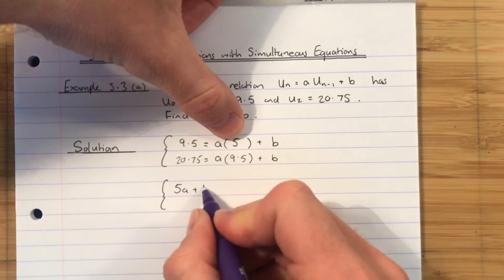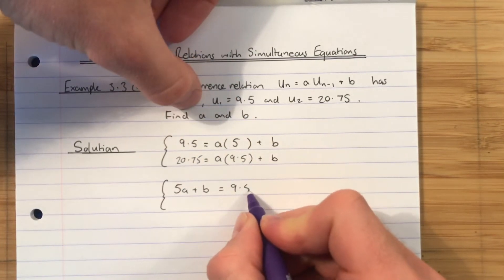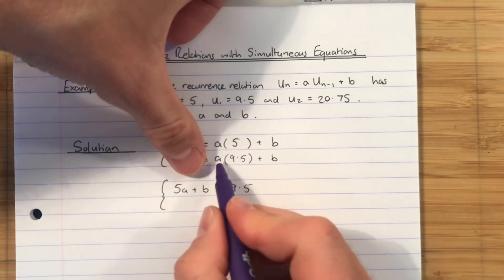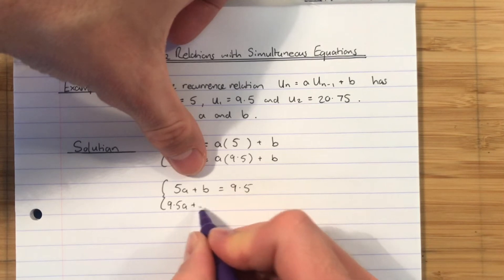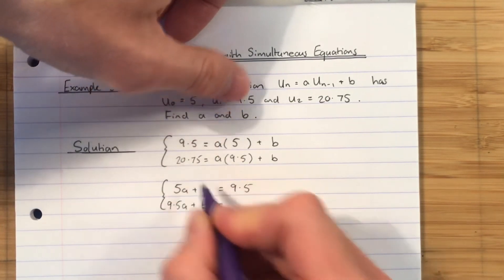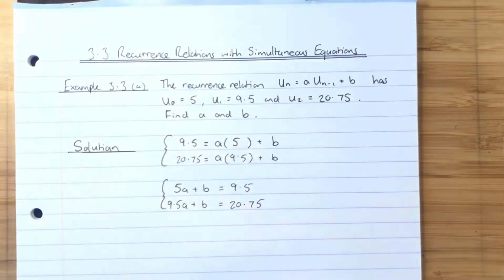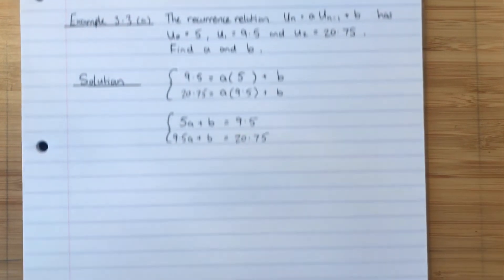So I'm going to rewrite those. 5A plus B is equal to 9.5. Like that and that are exactly the same thing. And then this one's going to be 9.5A plus B equals 20.75. So they should be nice and straightforward to solve because we always will have this loose B term. It's just a copy of itself.